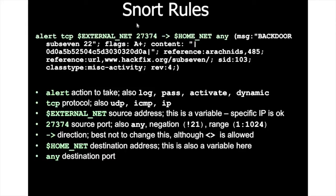Let's go through the keywords one by one in the Snort rule. First, 'alert' is the action to take — it can be log, pass, activate, or dynamic. Then 'tcp' is the protocol, which can also be UDP, ICMP, or IP. Next, 'external_net' is the source address — this is an environment variable.